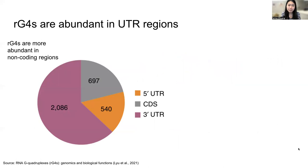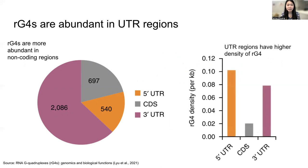RNA G4s that were experimentally detected have been found to be more abundant in the non-coding UTR regions compared to the coding regions. Within the UTR regions, a higher density of RG4s have been found in the 5' UTR than in the 3' UTR. This indicates that most RG4s don't directly code for protein, but rather might have regulatory effects.